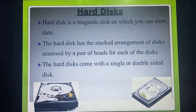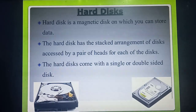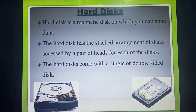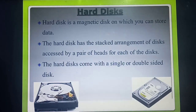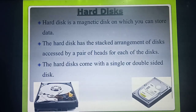The hard disk may be a single side disk or double side disk. Three points for hard disk: it is a magnetic disk, you can store data permanently, it is arranged in a stack arrangement, and it is accessed by means of a head. The hard disk may be single-headed or double-headed.